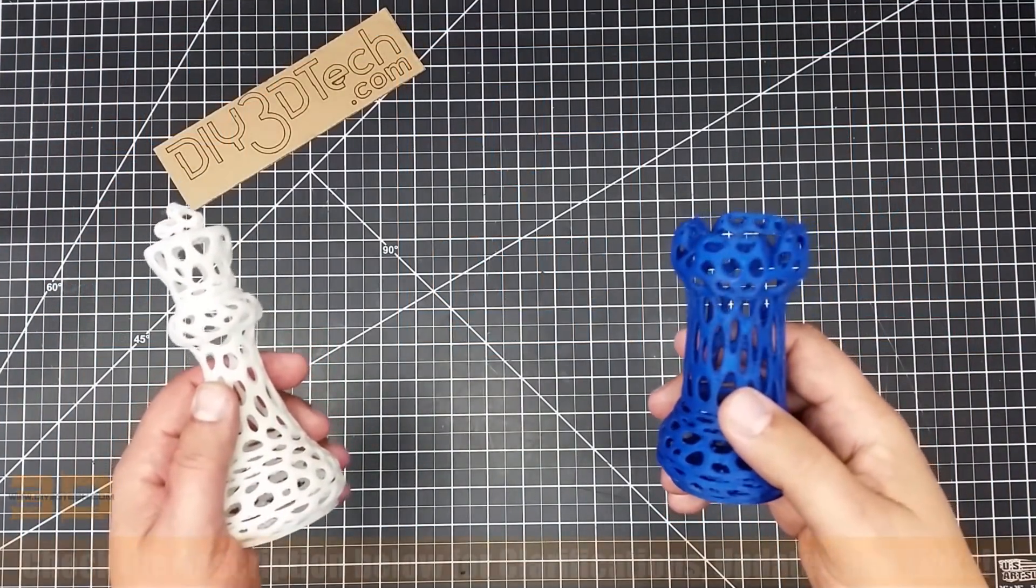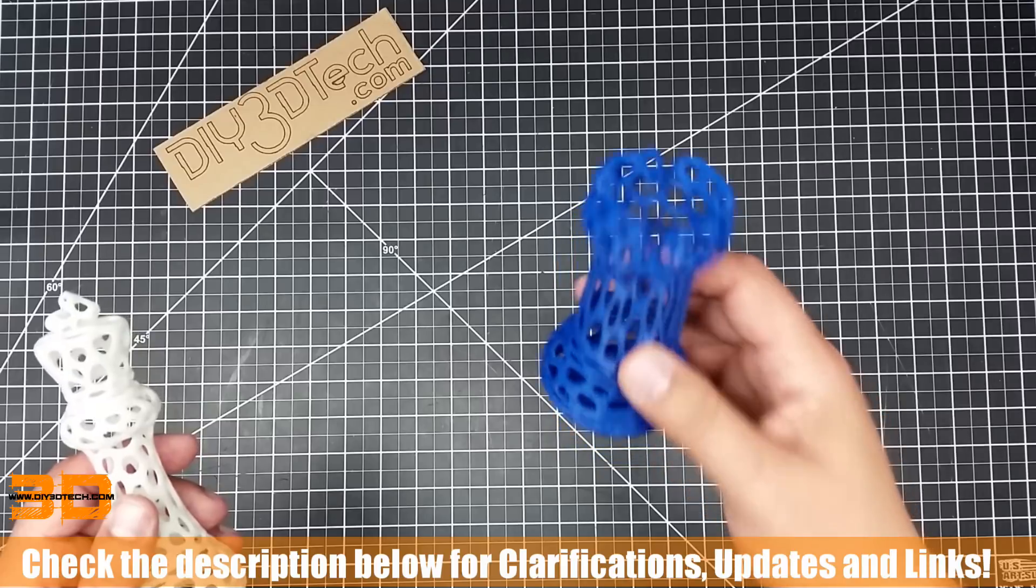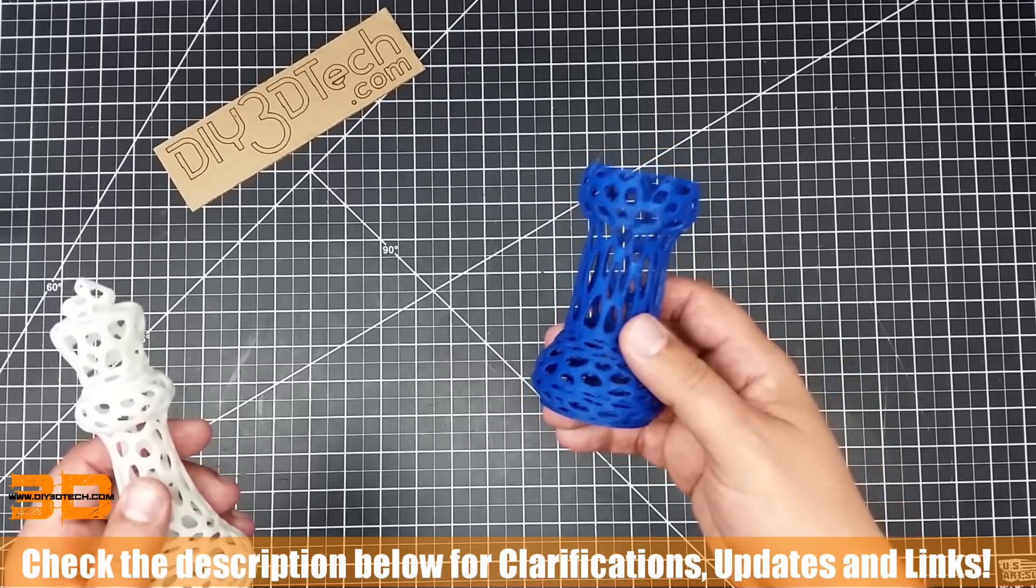Welcome to this episode of DIY3Dtech.com. In this episode, we're going to be talking about printing PETG on the JG Aurora printer.